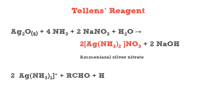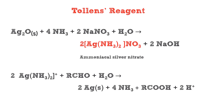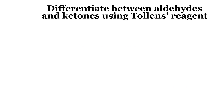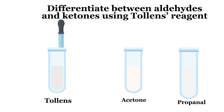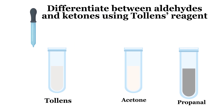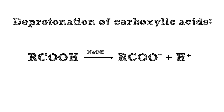When Tollens' reagent is warmed with aldehydes, the silver ions act as a mild oxidizing agent that oxidizes the aldehyde into the corresponding carboxylic acid, where the silver ions themselves are reduced to silver, forming a silver mirror inside the tube. Under the alkaline conditions, the formed carboxylic acid loses its proton, forming a carboxylate ion.